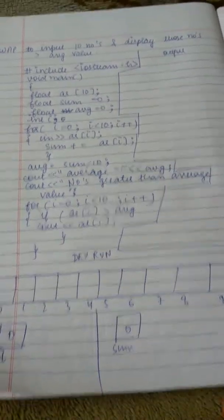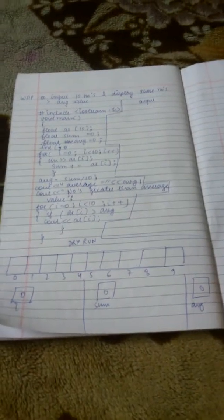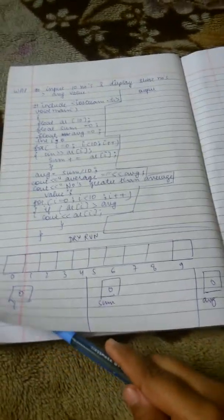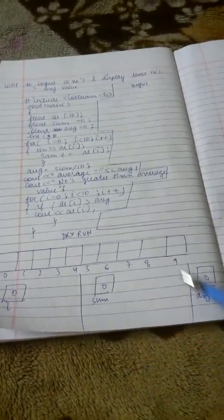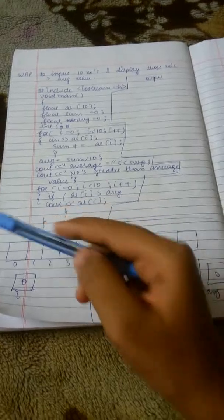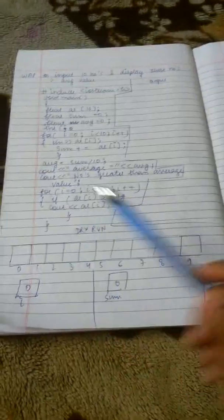Now we will see the dry run of this program. I have made boxes for each variable i, sum, and average, and the array of 10 elements. I have numbered them also, 0 to 9.